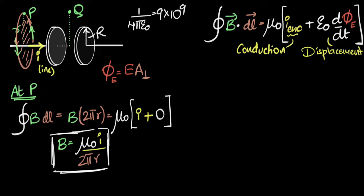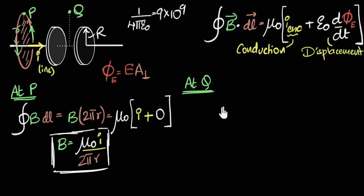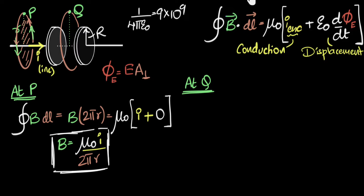Now let's calculate the magnetic field at Q. From the previous video, we saw experimentally that the field at Q should be the same as at P. Now is a good time to pause and try to use Ampere-Maxwell's law yourself. Just like before, we choose a circular Amperian loop through Q and walk in the same direction. The left-hand side is identical: B × 2πr.